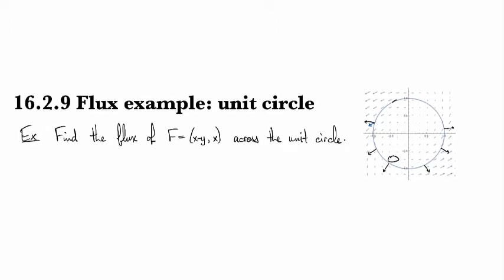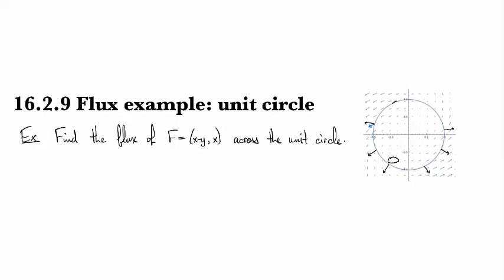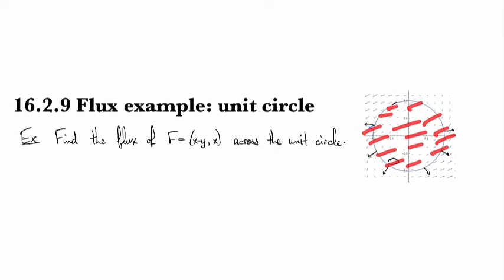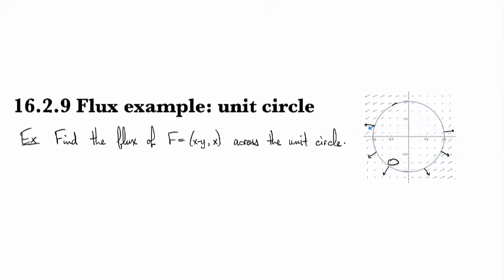And in particular, if you had like a constant vector field, so like if all the arrows were pointing the same direction going through here, then you would expect the net flux to be zero because you'd have a bunch of flux coming into the region here and then the same coming out of the region there, right?